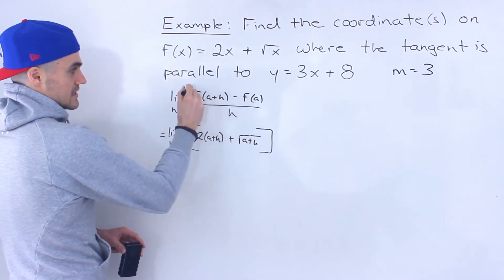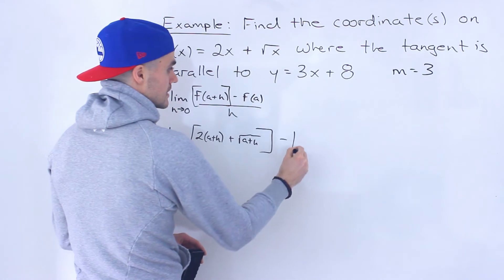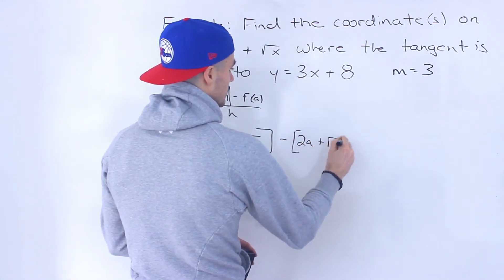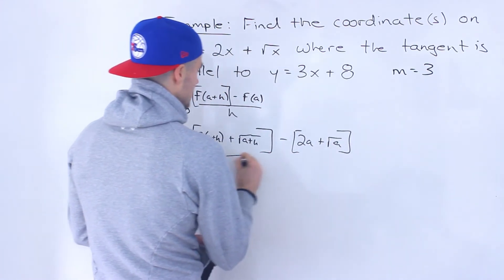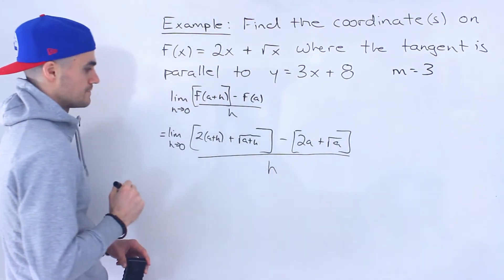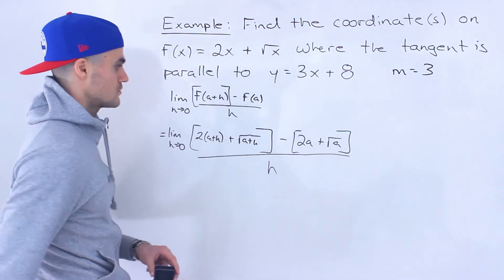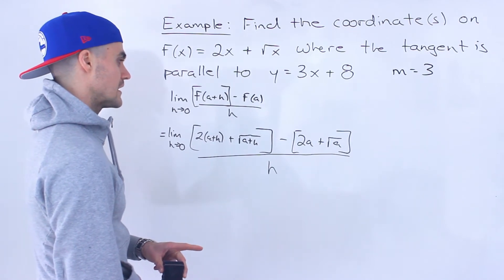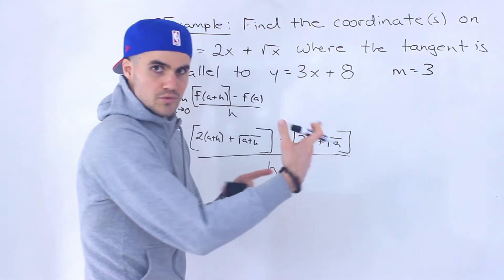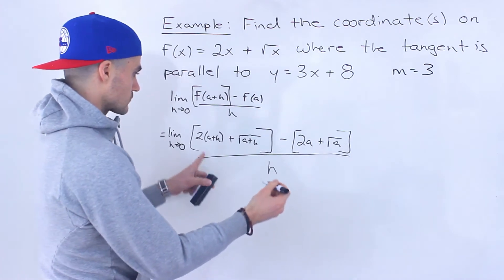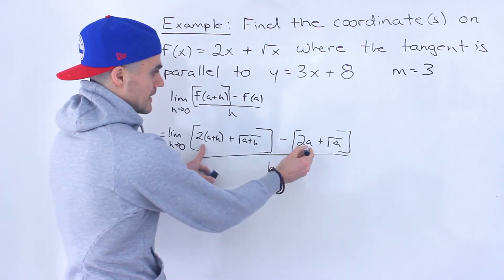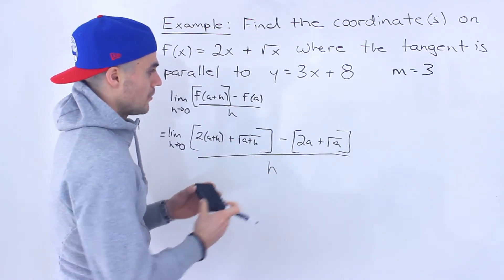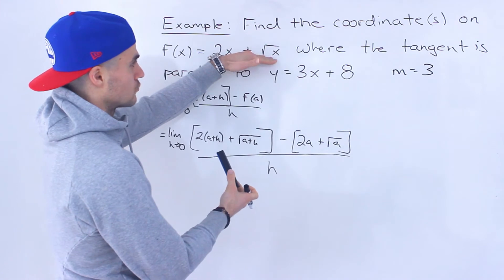This square bracket here is f of a plus h. And then we're going to be minusing f of a, so we'd plug in a for all the x values. And that's going to be all over h. So we've got this big limit to work with. This one is a little bit tricky because usually if we have square roots, we're going to be rationalizing. But notice we have a 2x and then a root x.